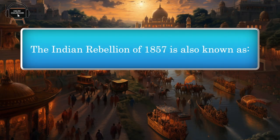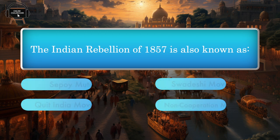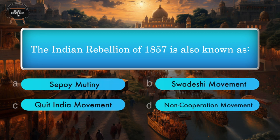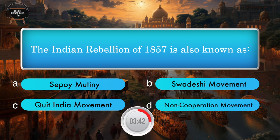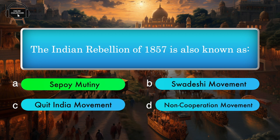The Indian Rebellion of 1857 is also known as — Sepoy Mutiny, Swadeshi Movement, Quit India Movement, Non-Cooperation Movement. Answer: Sepoy Mutiny.